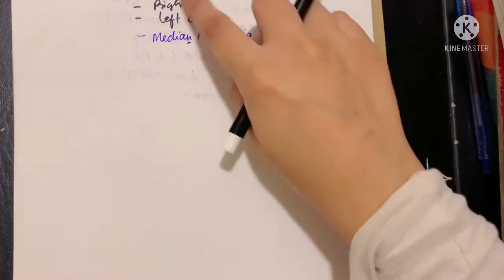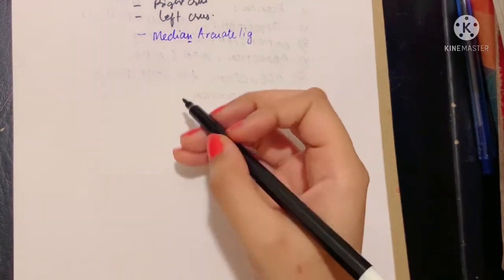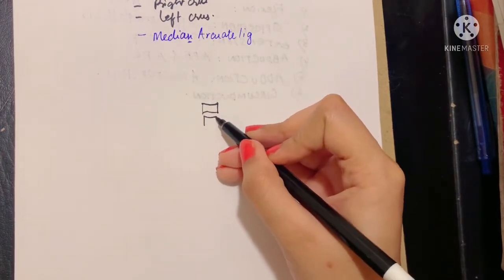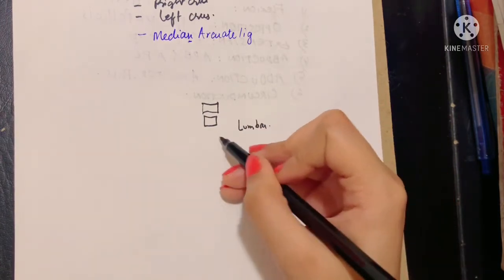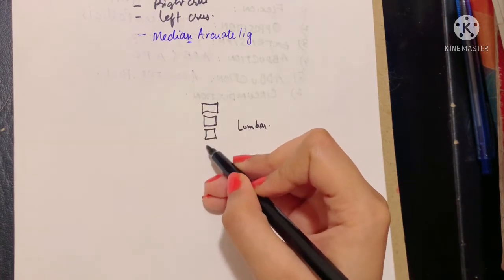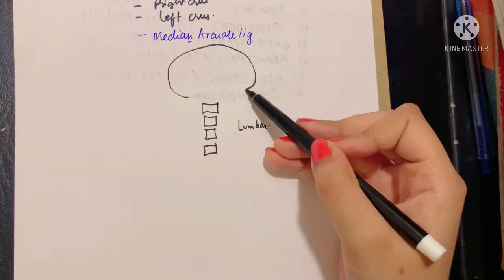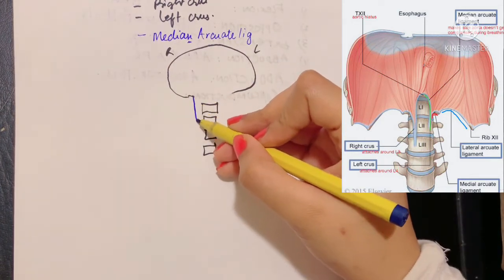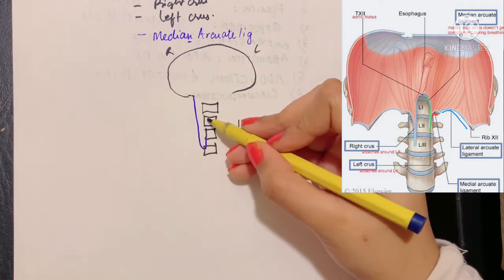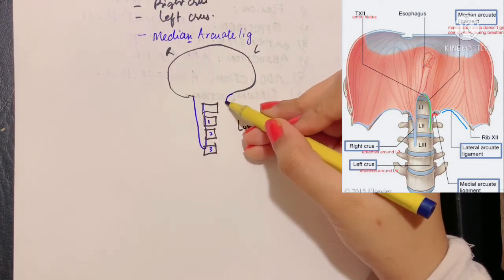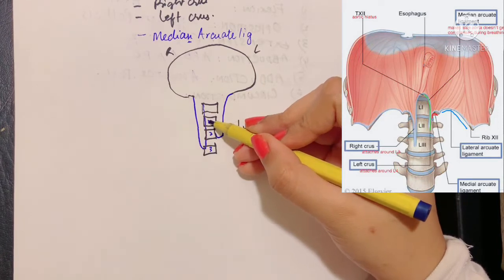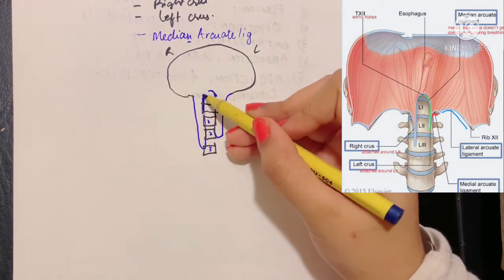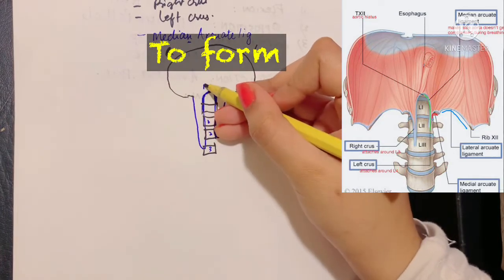The lumbar part of the origin is a little more complex. The 12th thoracic vertebra is where the thoracic cavity ends; below it are the lumbar vertebrae L1, L2, and L3. The diaphragm is divided into a right and left crus. The right crus attaches to lumbar vertebrae 1, 2, and 3, while the left crus is smaller and attaches to vertebrae 1 and 2 only. The medial margins of both crura meet in the median plane and join together as the median arcuate ligament.